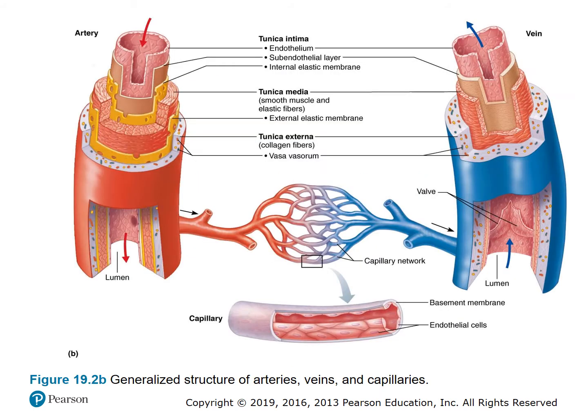Figure 19.2b shows a cross-section of the artery, the vein, and a capillary. Notice that the arteries and veins have the three tunics: the tunica intima (innermost), the tunica media, and the tunica externa, along with the vasa vasorum for large arteries and veins. At the level of the capillaries, it's basically endothelial cells surrounded by a basement membrane.